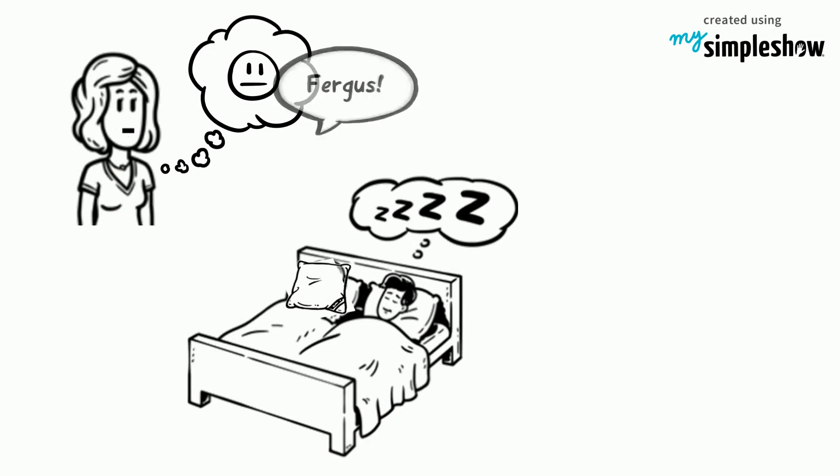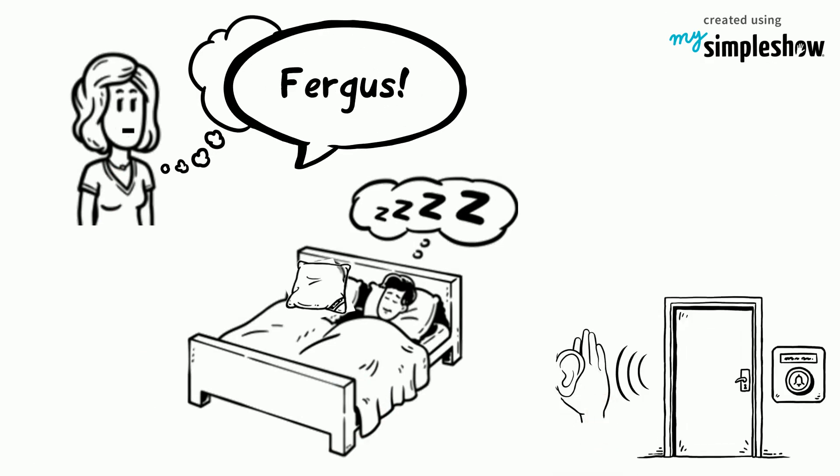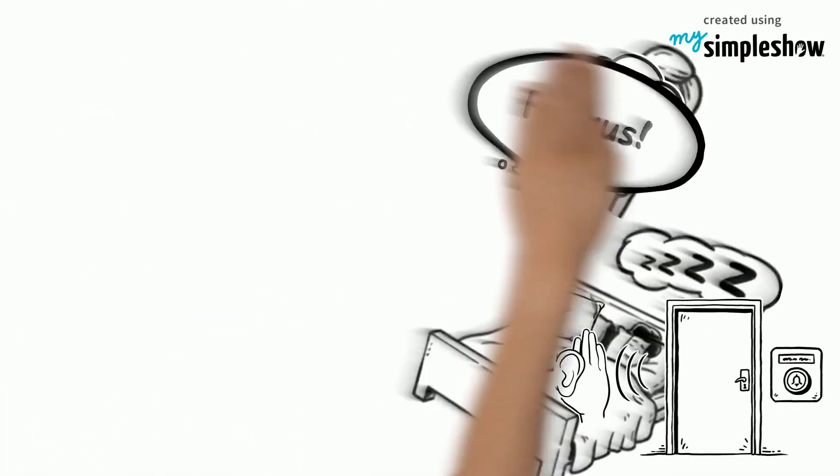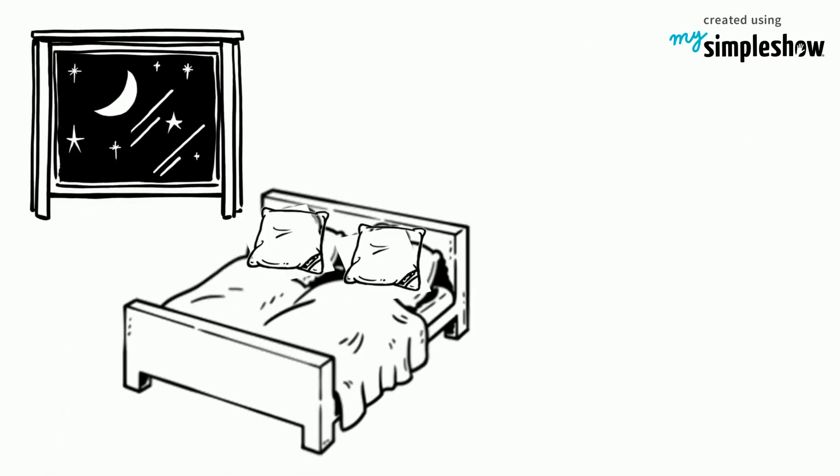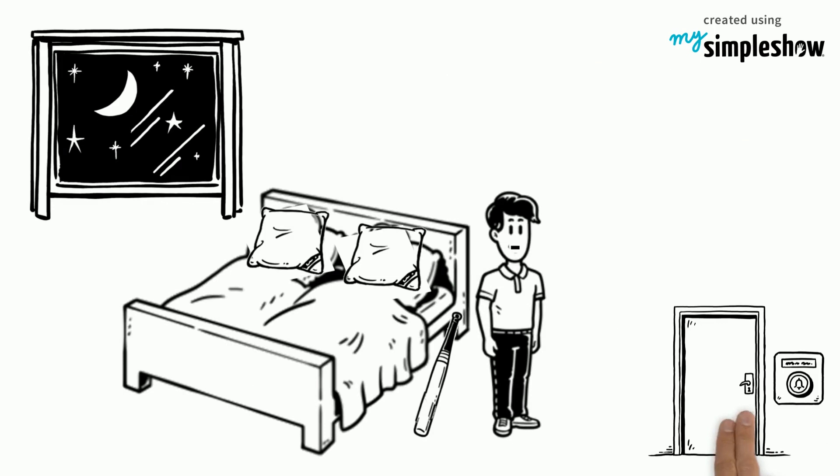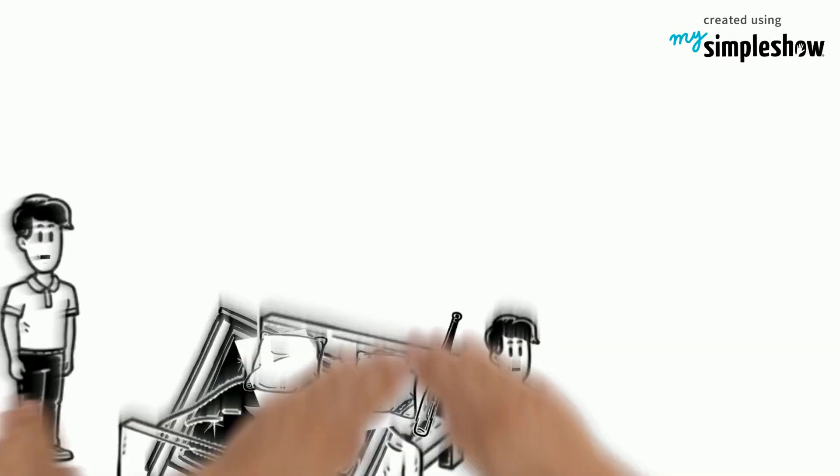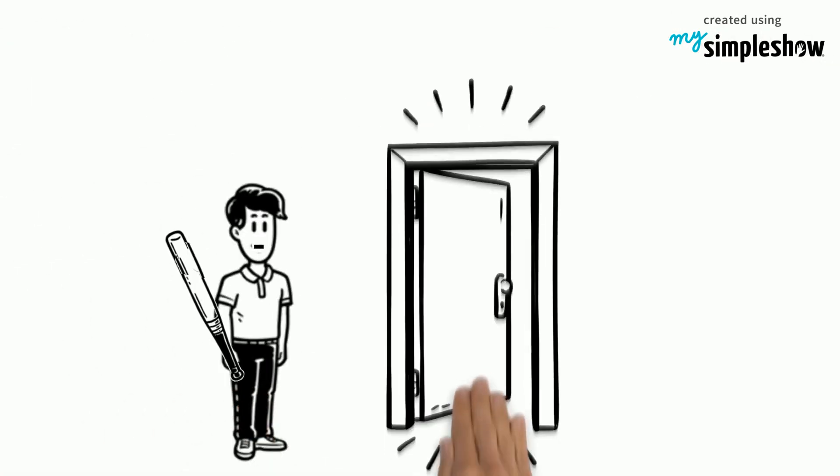So she woke Fergus up and told him that she heard the doorbell. He quickly jumped up, put on clothes, grabbed a baseball bat and bravely went to the front door. He took a deep breath and opened it.